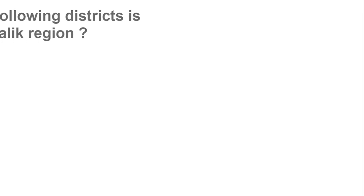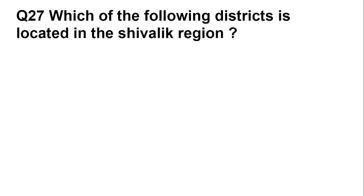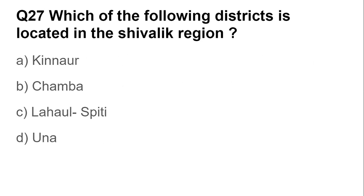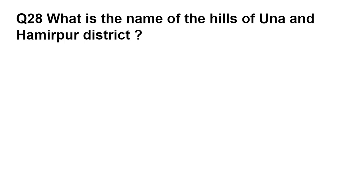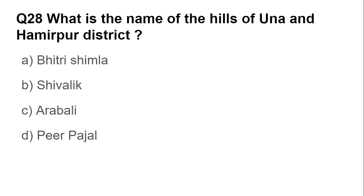Question number twenty-seven: Which of the following districts is located in the Shivalik region? Options are: Kinnaur, Chamba, Lahaul-Spiti, and Una. The answer is Una, which is situated in the Shivalik region. Question number twenty-eight: What is the name of the hills of Una and Hamirpur district? Options are: Shimla, Shivalik, Rabari, and Pir Manjal. The answer is Shivalik — these are called Shivalik mountains.